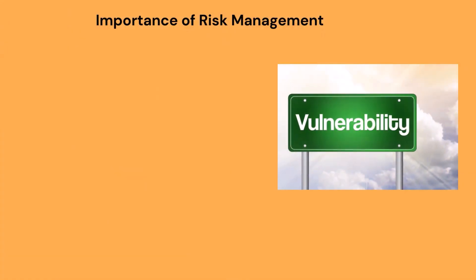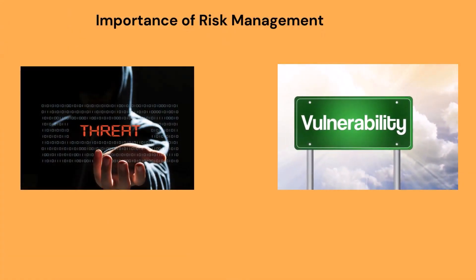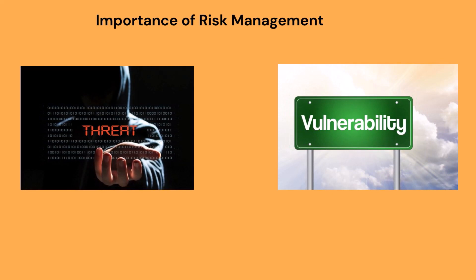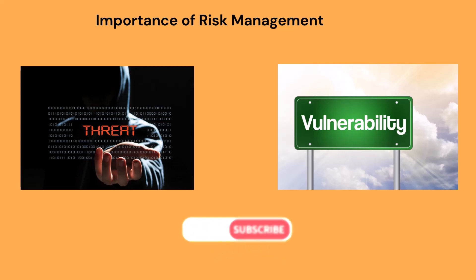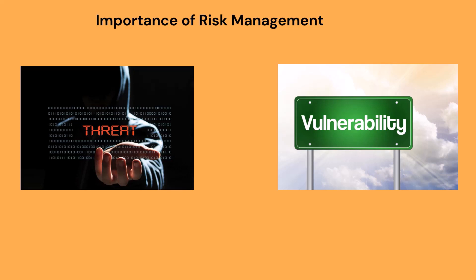What do we mean by threats and vulnerabilities? A vulnerability is like a hole or a weakness in how an organization protects its important stuff, like information. A threat is something or someone that wants to use that weakness to get in without permission. When a threat takes advantage of a vulnerability, it can cause harm to something valuable. For example, a big storm can be a threat to the electricity supply, which is vulnerable to flooding.